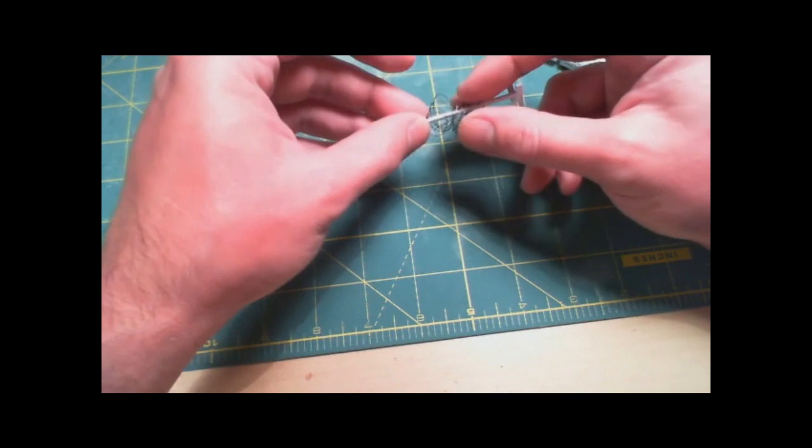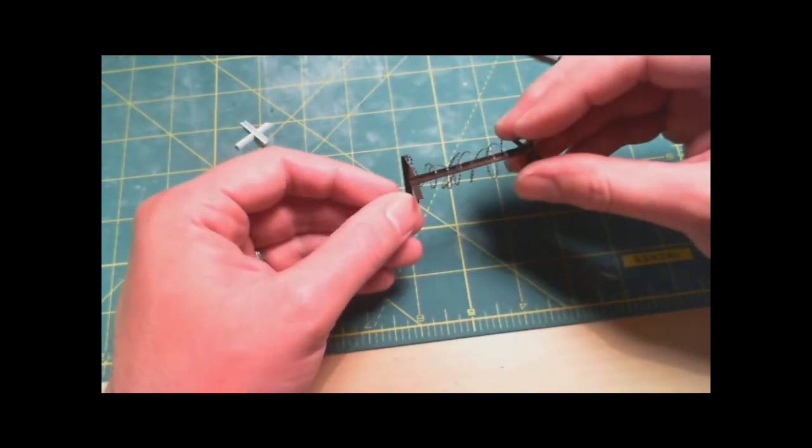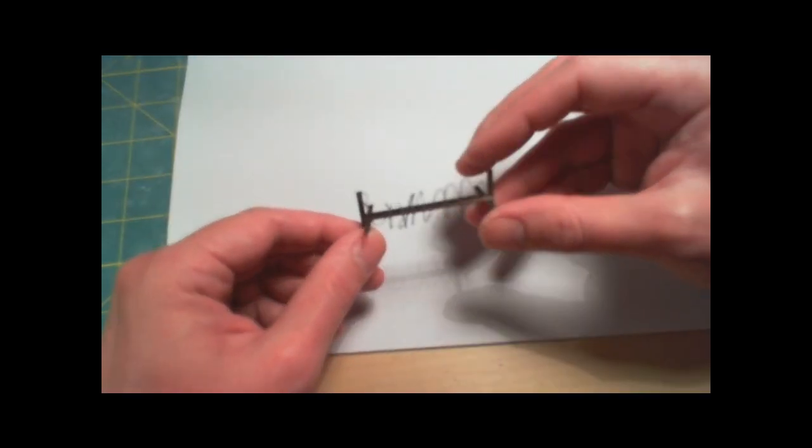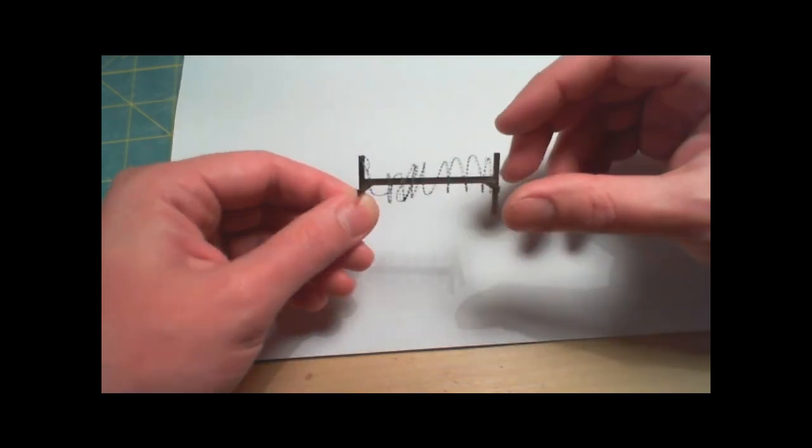For a little added bounce to it, you can actually take it, wrap it around the ends here like I've done on this one. So it's actually held up on the ends there, keeps it nice and loose for you.